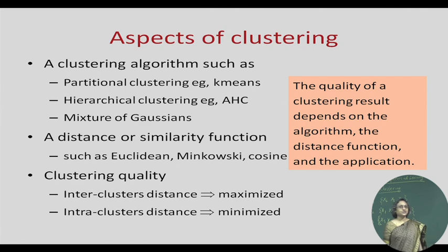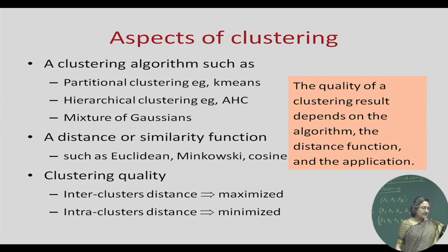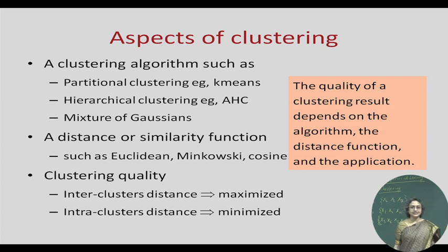There are different aspects of clustering. First, there is the clustering algorithm, and there are different types. There are partitional algorithms which take the data and divide them into a number of groups — K-means is an example. Then there are hierarchical clustering algorithms which hierarchically divide the data into clusters, either top-down or bottom-up (as in agglomerative hierarchical clustering). There are also model-based methods such as mixture of Gaussians, and density-based methods like DBSCAN.